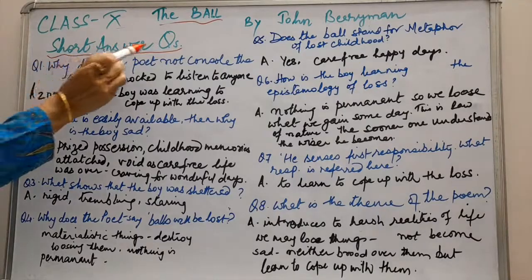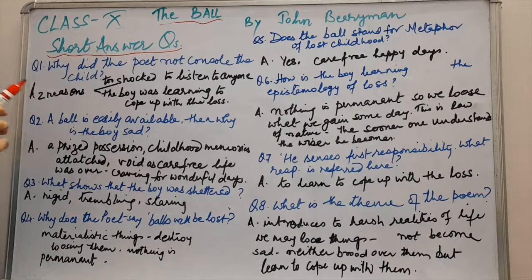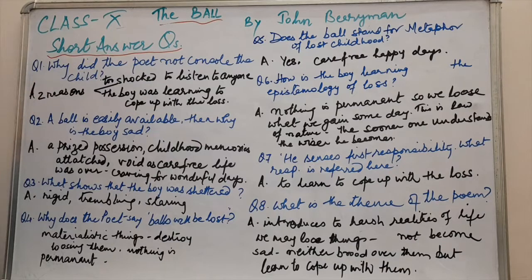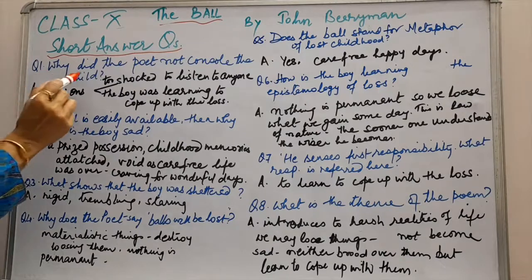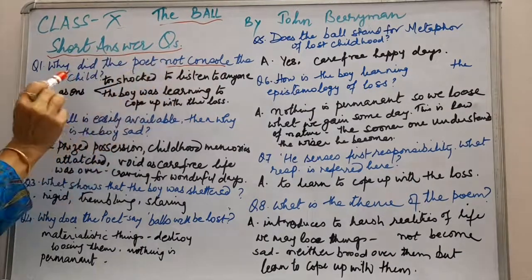Children, here are short answer questions. I am just going to give you value points — you can elaborate them, because the poem is very clear to you now. If you find any difficulty writing the answers, you can go to my Facebook page, the link of which is given in the description box below. Question number one: why did the poet not console the child?